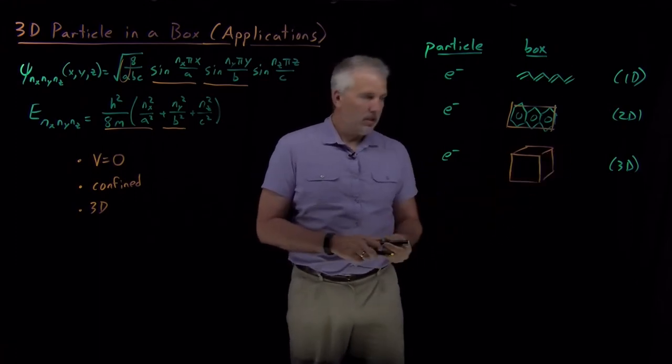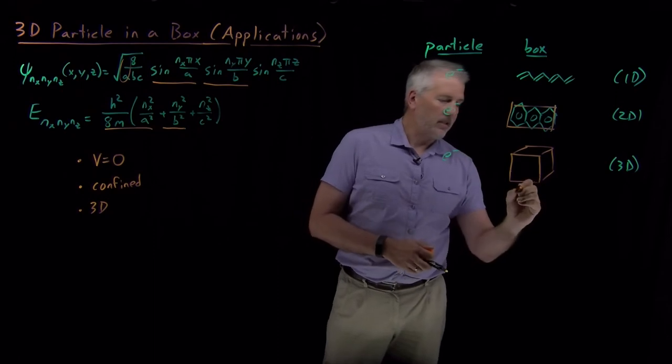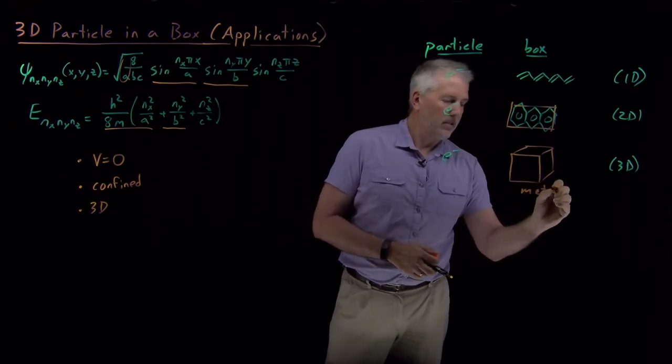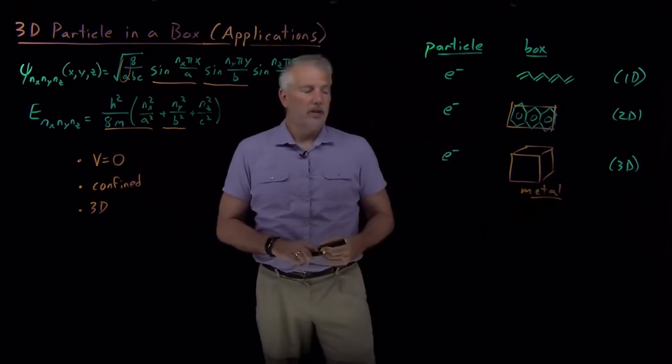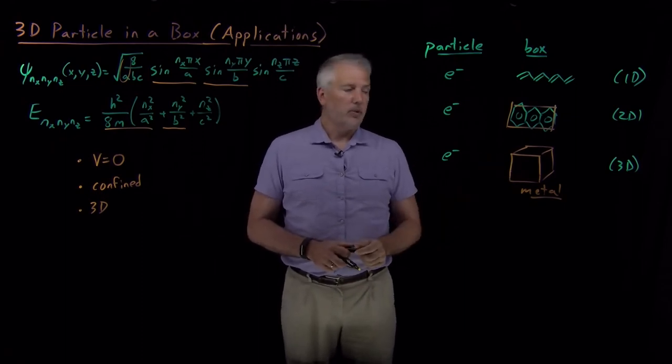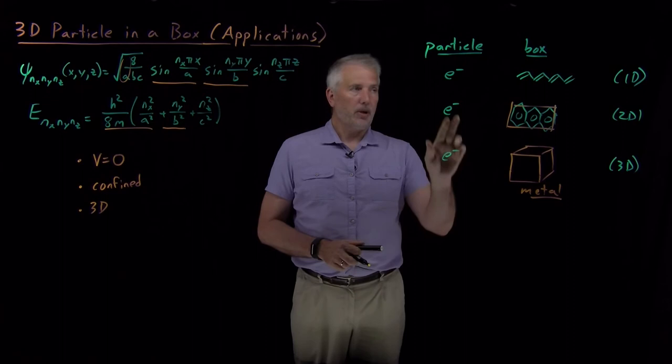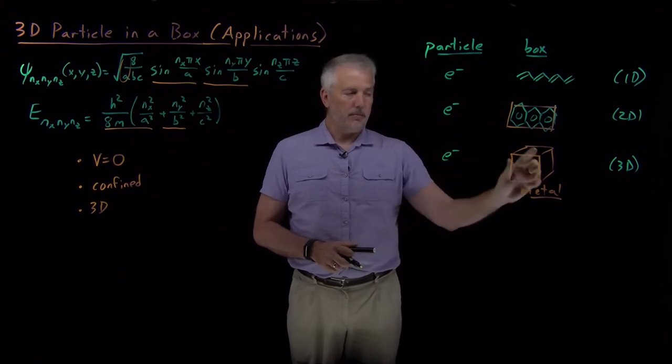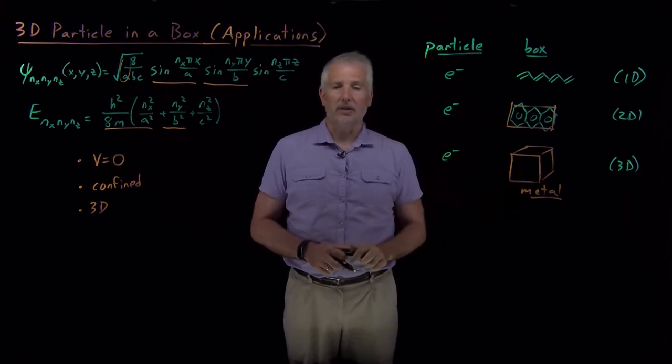The electron can flow within the solid, can't leave the solid. So what I'm talking about in this case is a metal. If I have a block of metal that the electron can move freely within, that would be a particle in a box where the metal itself is the box and the electron is the particle.